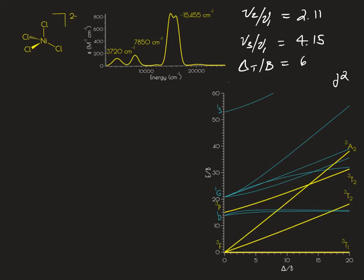So going through, doing a vertical line at 6, going across. We're going to look for our E over B's corresponding to those.